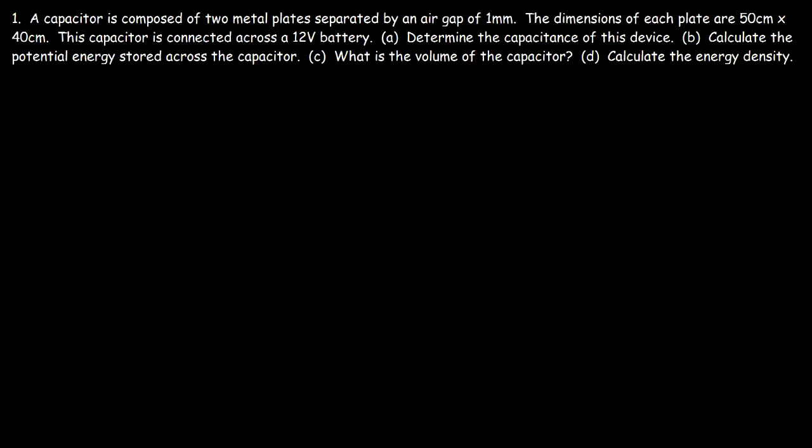Now let's work on this problem. A capacitor is composed of two metal plates separated by an air gap of one millimeter, and we're given the dimensions of each plate. It's connected across a 12-volt battery. Determine the capacitance of this device.